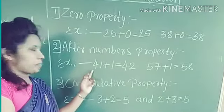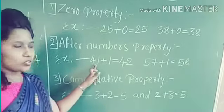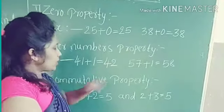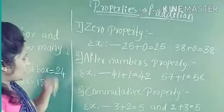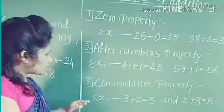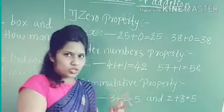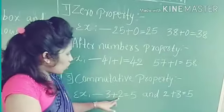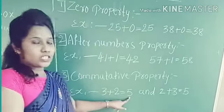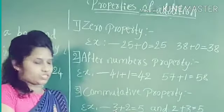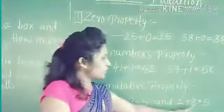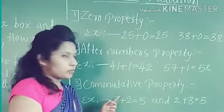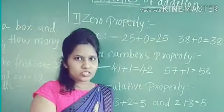57 plus 1 is equal to 58. Now let's go to the next property of addition — the commutative property. Changing the order in which we add 2 numbers does not change their sum. For example, 3 plus 2 and 2 plus 3 give the same answer.